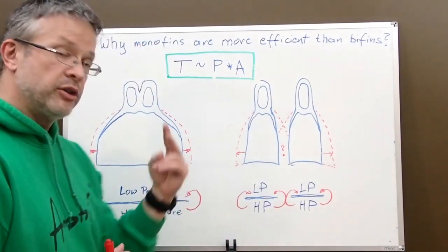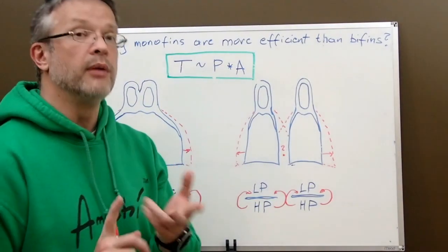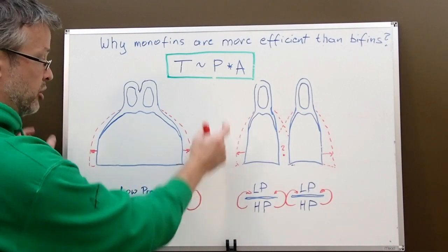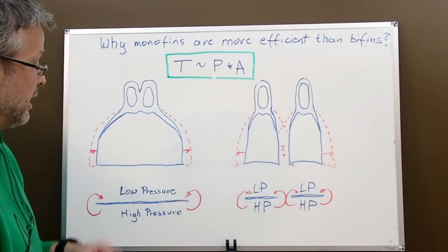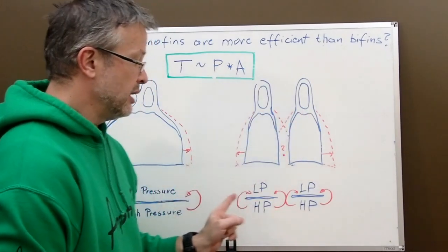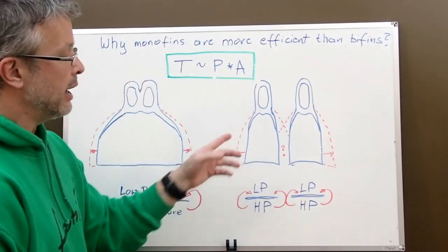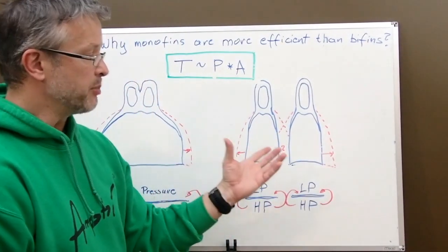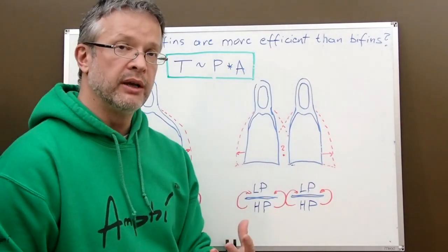And these are basically the two reasons why monofins are stronger and more efficient. You can definitely make them wider and limit the contribution of those areas to the overall performance. And of course, you have only two areas here. While in bifins, you have four areas which leak the pressure, so to speak. And also, we cannot increase the width or aspect ratio of those fins indefinitely because we are limited by human anatomy.